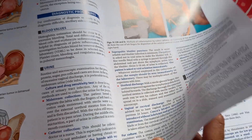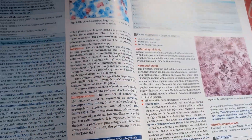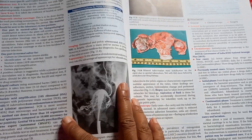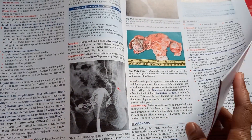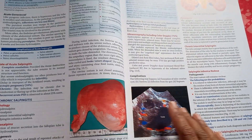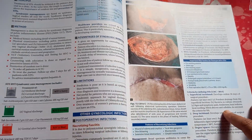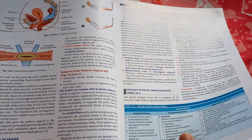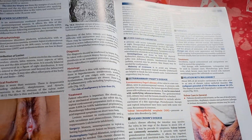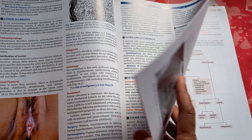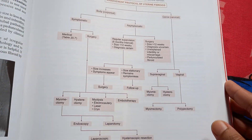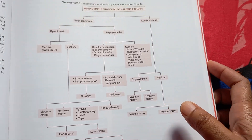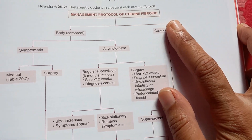This is the most commonly used gynecology textbook. Apart from this, people also use Shaw's Gynecology textbook. There are some flowcharts given here — for example, on the management of uterine fibroids.